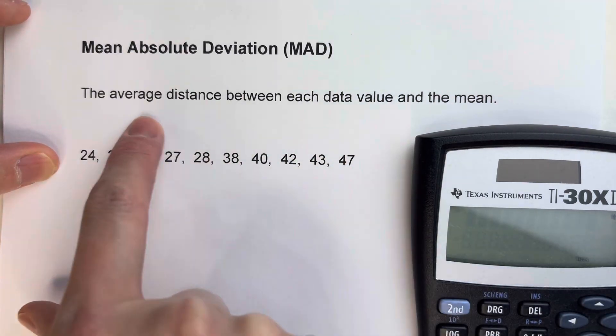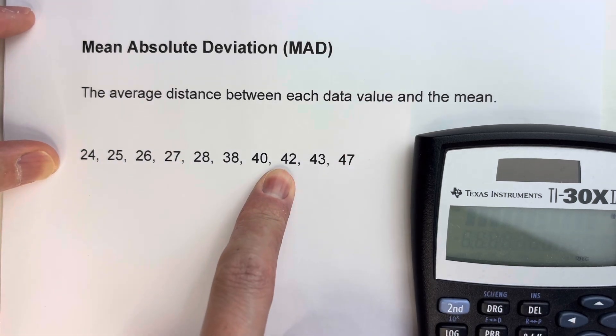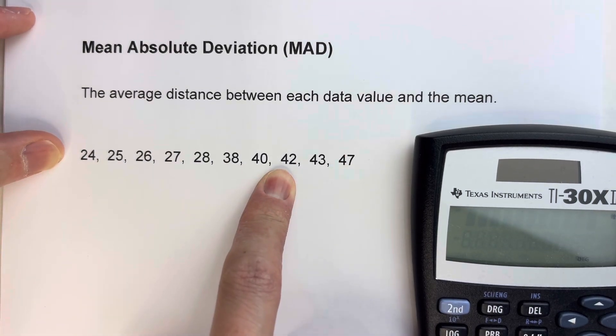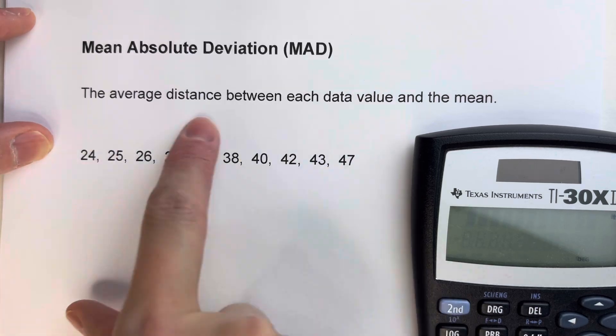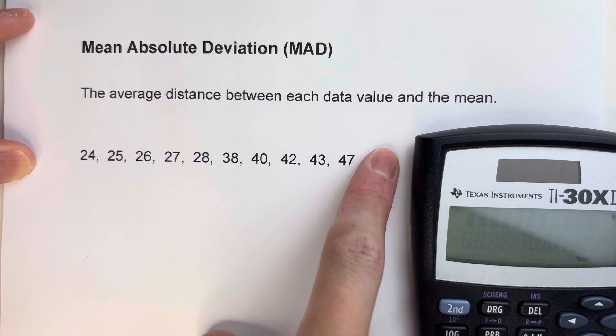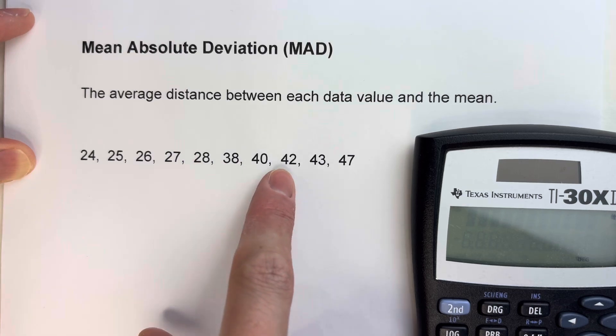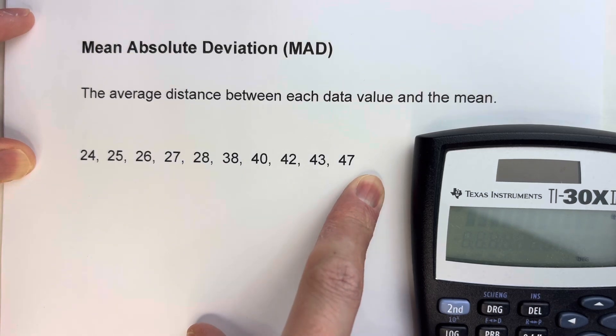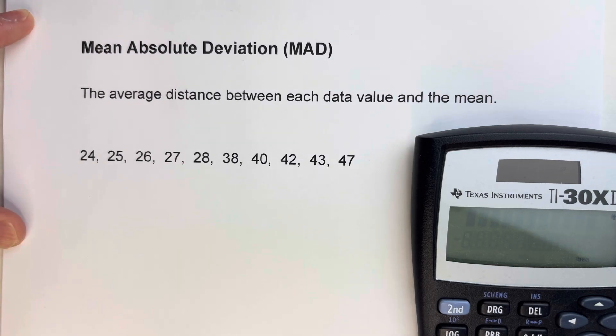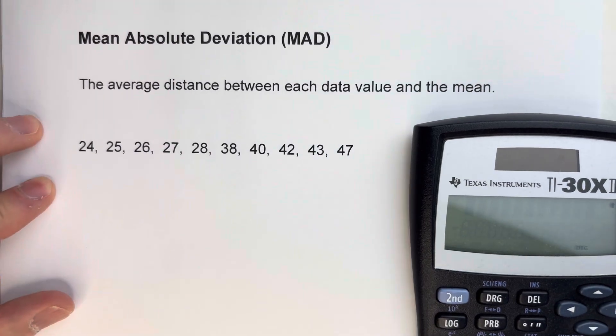So when we have a data set, what we need to do is three steps. First, find the mean of the whole data set, then figure out how far each of these data values is away from the mean, and then take those distances and find the average of those. So let's do this example here.